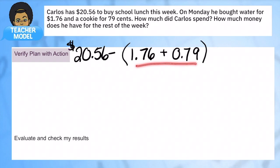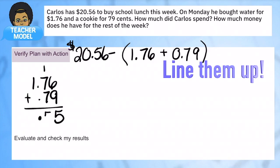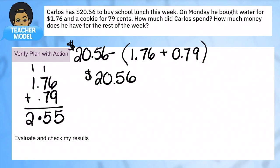Because this is in parentheses, I'm going to do this part first, and once I find out this number, I'm going to subtract it from this number. So let's do the first part: I'm going to stack up $1.76 and 79 cents, just making sure everything is stacked. Now I can add, and I know that he spent $2.55.